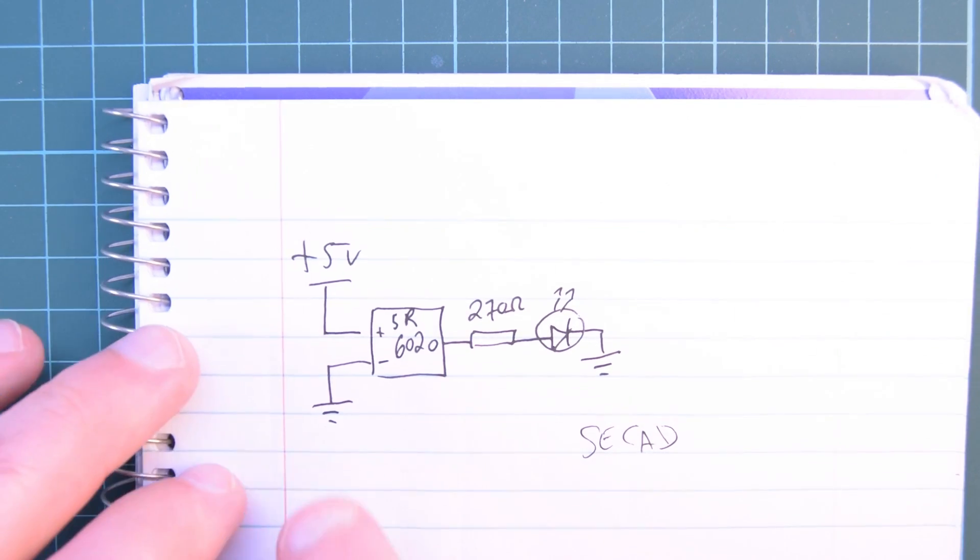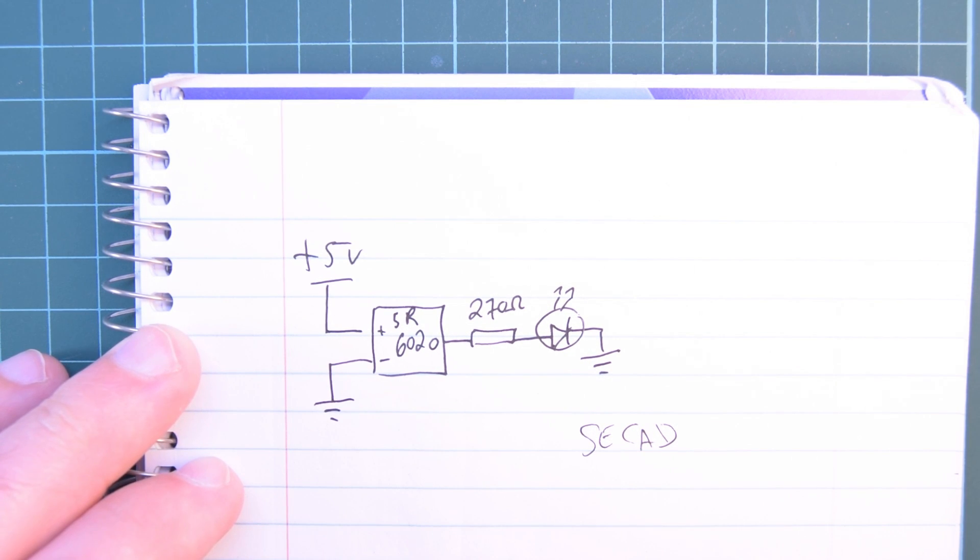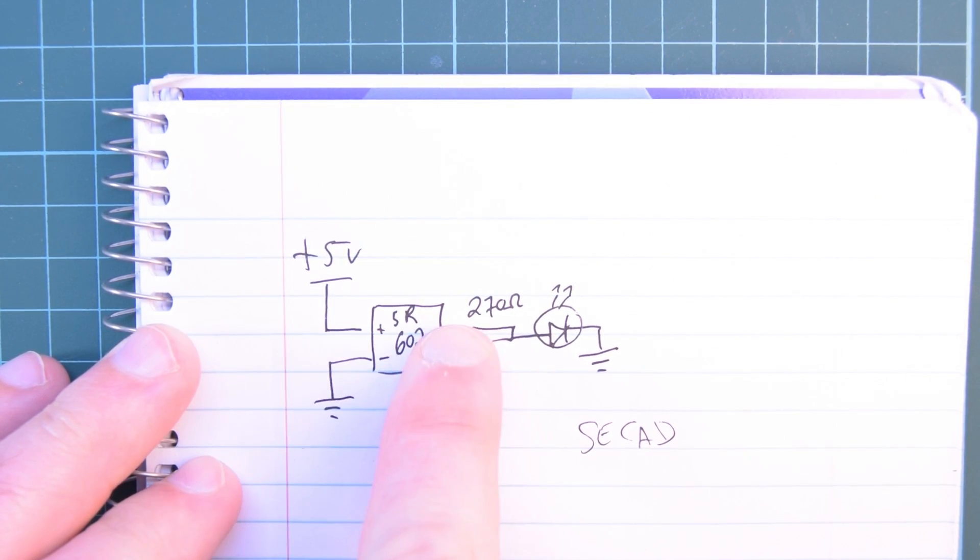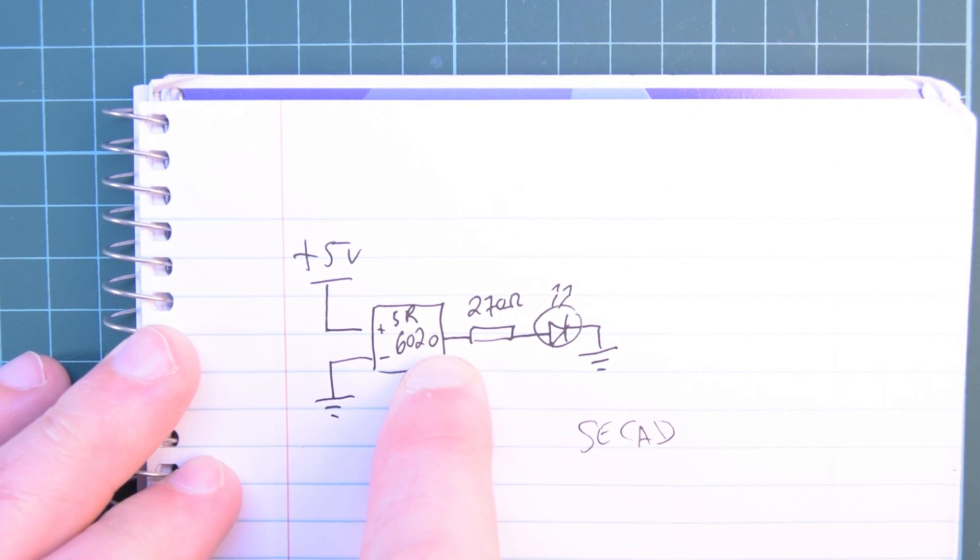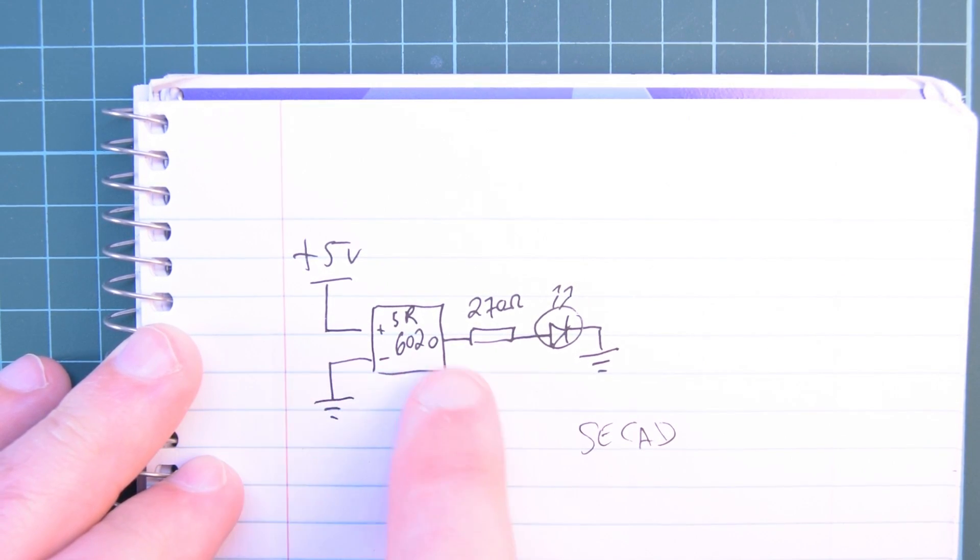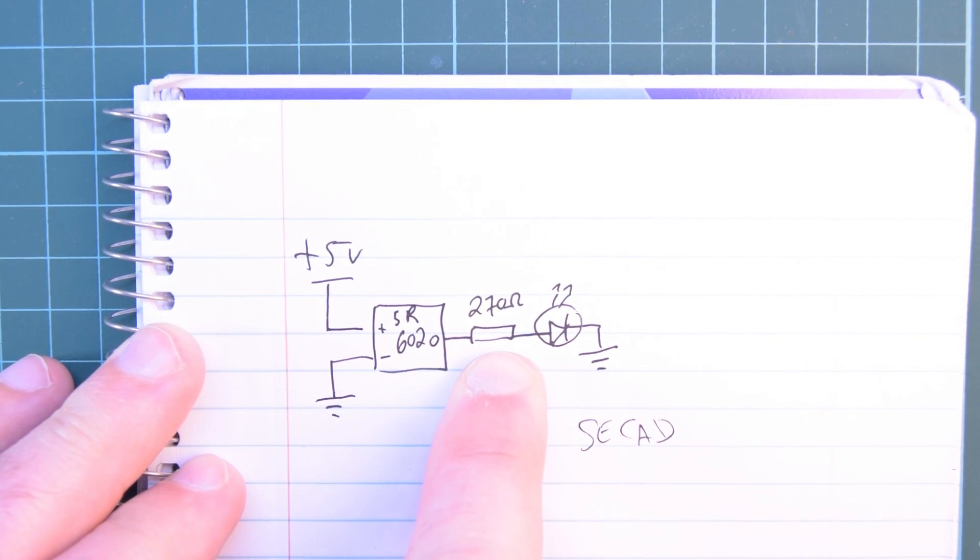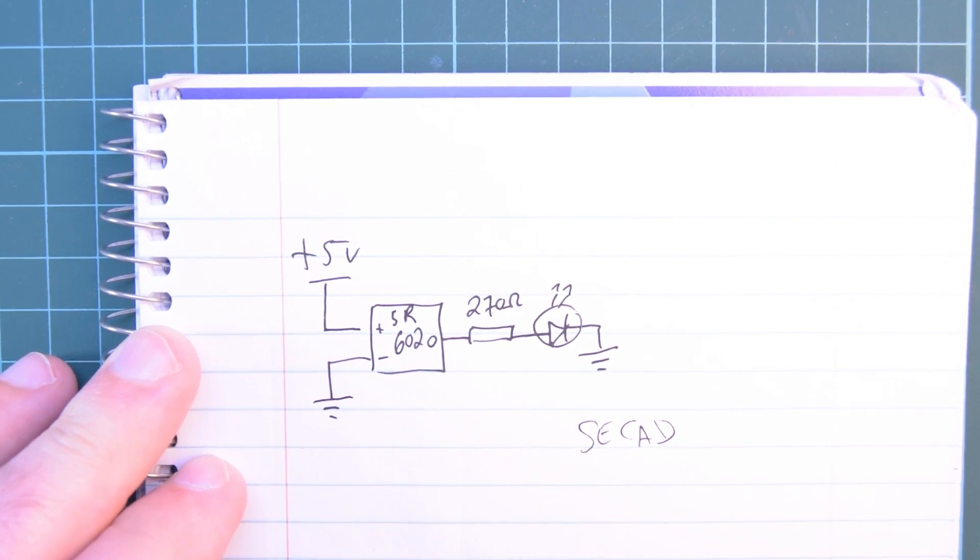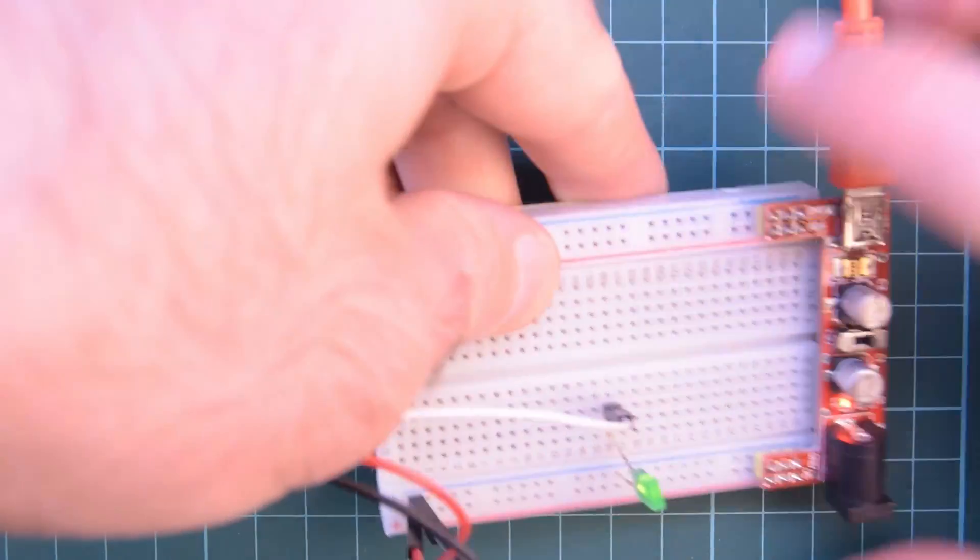And so, this is the super simple circuit I have knocked up. So, 5 volts there. Ground there on the SR602 module. That's not a 0. That's an O for output. So, positive, negative. Output, 270 ohm resistor. We've got an LED. And ground. So, that should work just fine. And here it is.